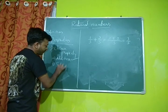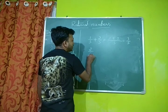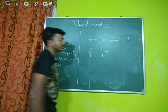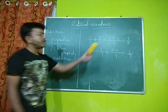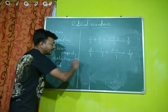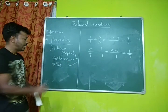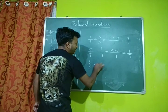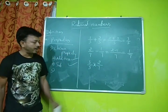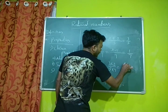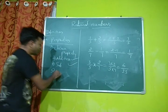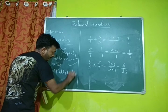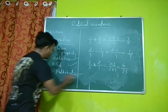Next, subtraction: 2 upon 7 minus 1 upon 7. These are also like fractions. 2 minus 1 is 1 upon 7. 1 upon 7 is also a rational number, so subtraction is also closed. For multiplication: 3 upon 5 multiplied by 2 upon 7. Numerator to numerator, denominator to denominator: 3 into 2 is 6, and 5 into 7 is 35. 6 upon 35 is also a rational number, so multiplication is also closed.